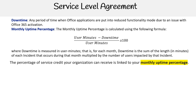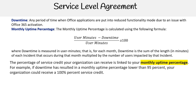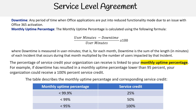The percentage of service credit your organization can receive is linked to your monthly uptime percentage. For example, if downtime has resulted in a monthly uptime percentage lower than 95%, your organization could receive a 100% service credit. The table here describes the monthly uptime percentage and corresponding service credit: less than 99.9% uptime yields 25% credit, less than 99% yields 50% credit, and less than 95% yields 100% credit.